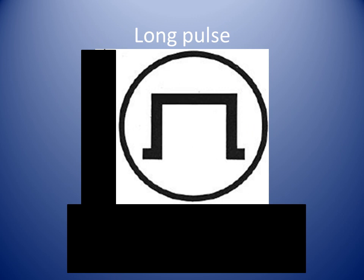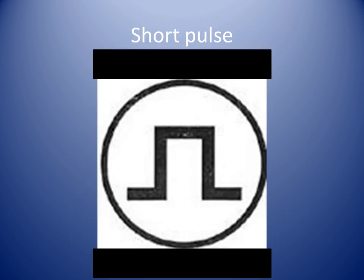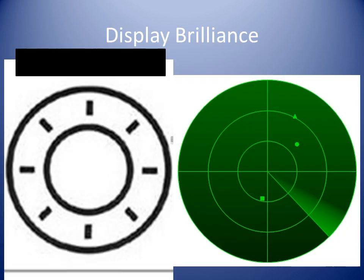Ideally, short pulse is used for short ranges up to 3 nautical miles, and long pulse for long ranges more than 12 nautical miles. But we can use the short pulse in long range and vice versa. When you have set a suitable range so that some targets are visible, adjust the Brilliance knob.